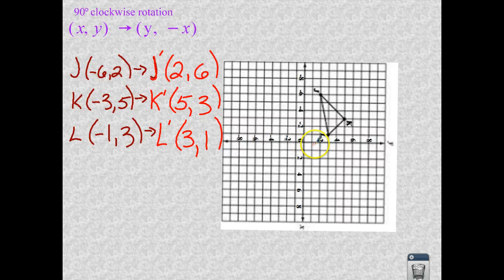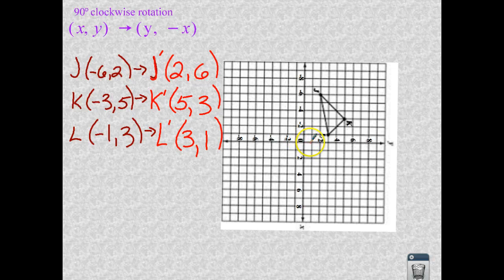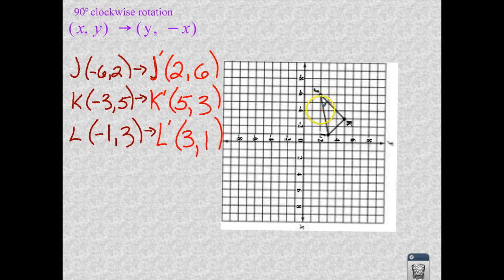Your k looks like it's 1, 2, 3, 4, 5, positive 6. Oh, sorry, 1, 2, 3, 4, positive 5, positive 3, and that checks. And your j is 1, 2, and then 1, 2, 3, 4, 5, 6. So 2, 6, and they all check out.